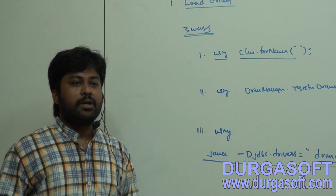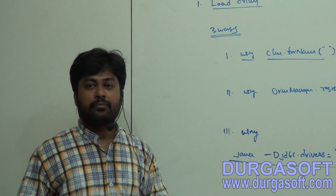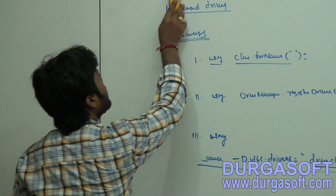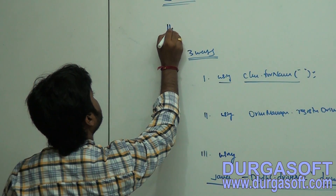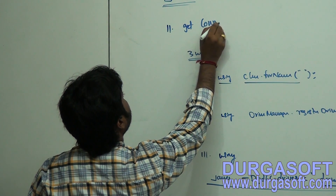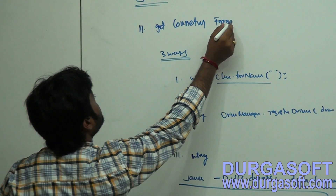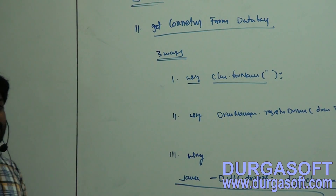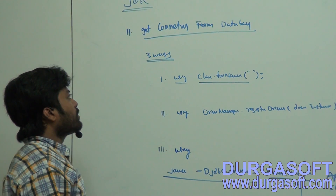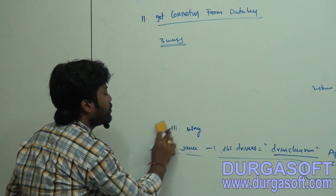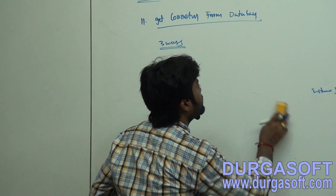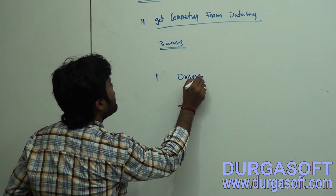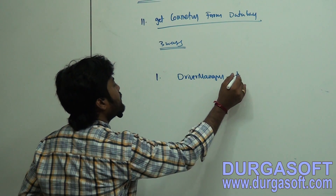This is the first step. Once after loading the driver into the JVM, we need to get the connection from the database. The next step is: get connection from the database. To get connection, just like we have three ways to load the driver, we also have three ways to get connection.